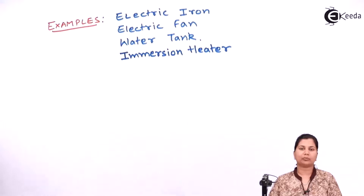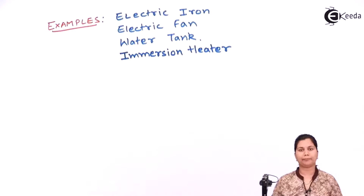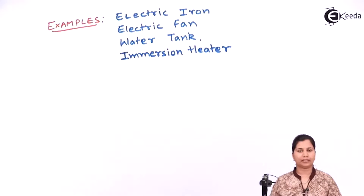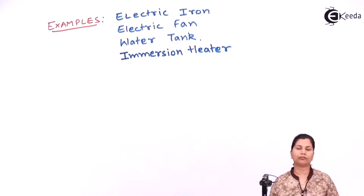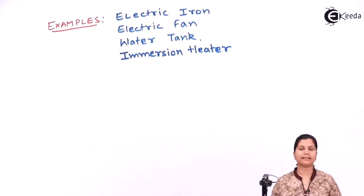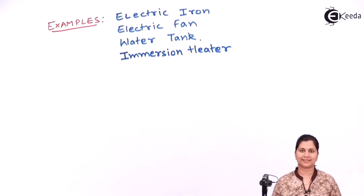In an immersion heater there is no mechanism that when it has attained the maximum temperature the power supply should be switched off. So this is an example of an open loop control system. We have studied the definition of open loop control system, drawn its generalized block diagram, and studied a few examples. Now let's study the second type of control system, which is the closed loop control system.